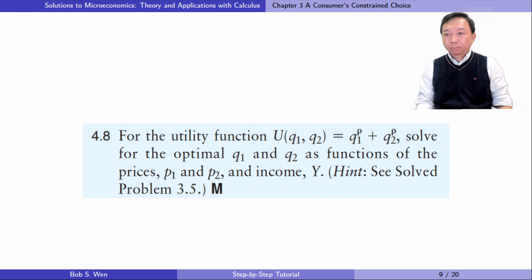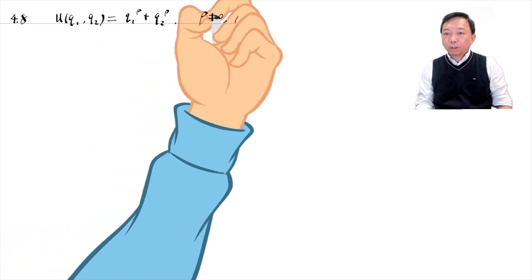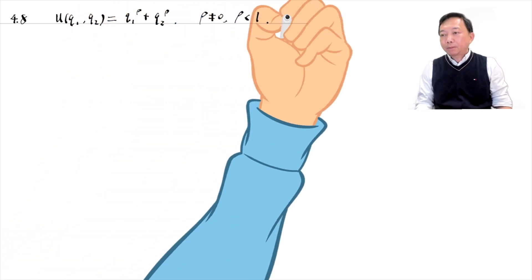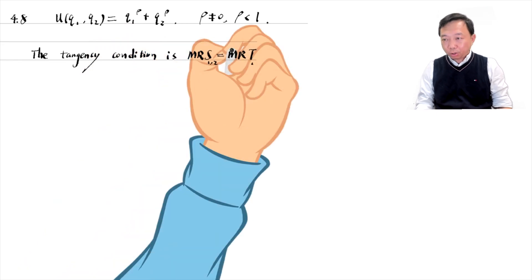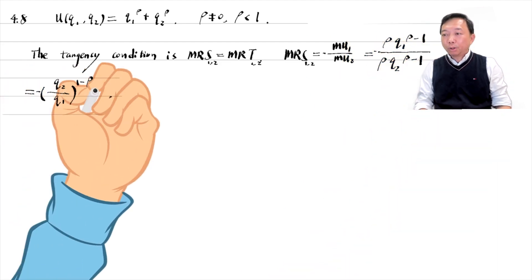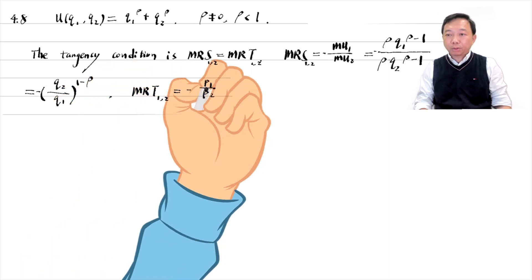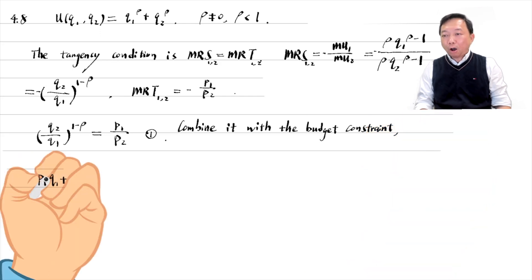Let's solve exercise 4.8. For the following utility function, solve for the optimal Q1 and Q2 as functions of the prices P1 and P2 and income Y. We use what is called a shortcut approach in the textbook. This method combines the tangency condition and the budget constraint to find the optimal interior bundle of goods that maximizes the consumer's well-being. The tangency condition is that the marginal rate of substitution equals the marginal rate of transformation. The marginal rate of substitution equals the marginal utility ratio, and the marginal rate of transformation equals the price ratio. Combining this tangency condition with the budget constraint, we can solve for the optimal bundle for the two goods.